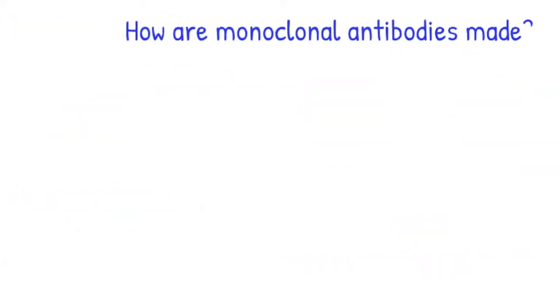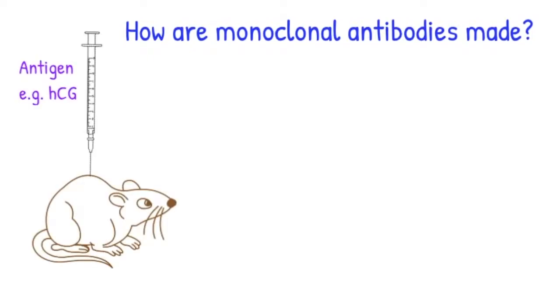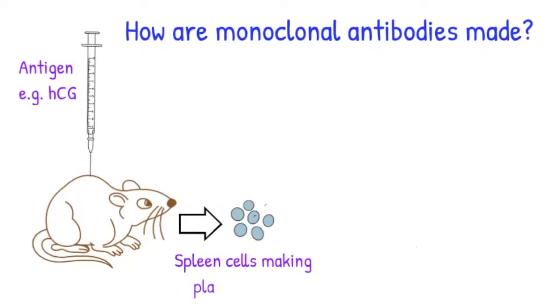How are monoclonal antibodies made? First of all, an antigen, such as HCG, is injected into a mouse. The mouse naturally produces plasma B cells, which produce antibodies specific to the antigen, so here they will be specific to HCG.